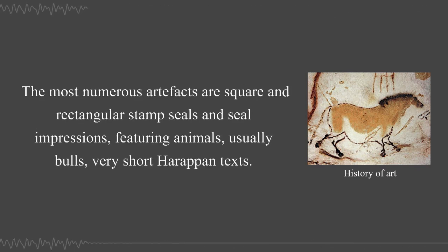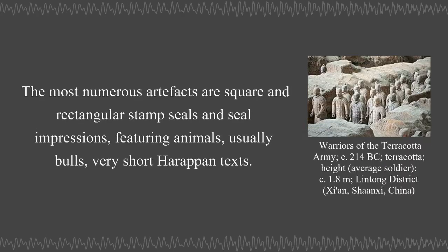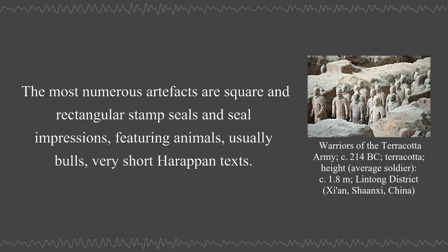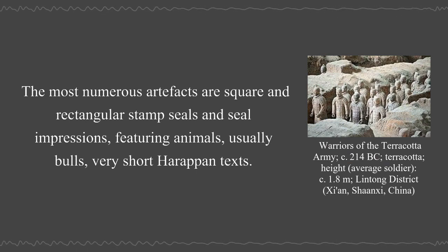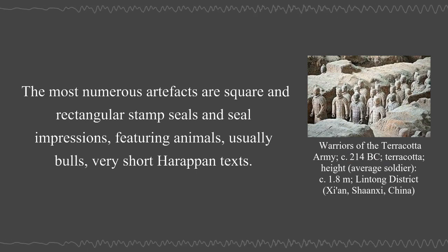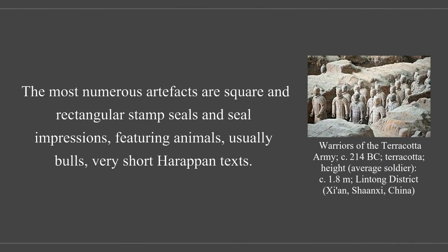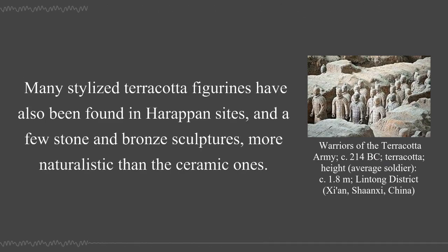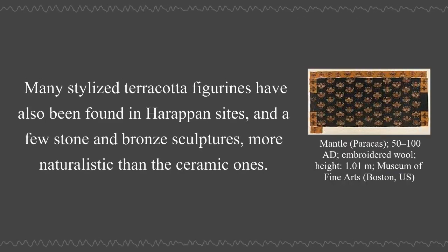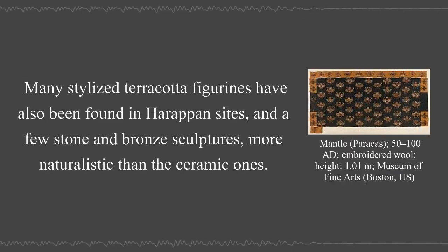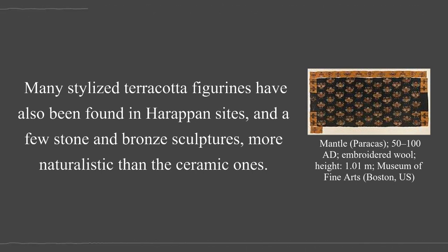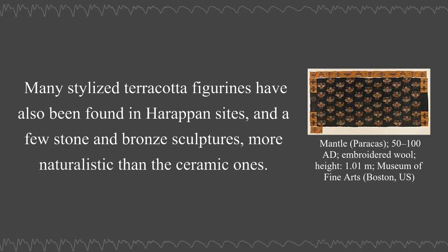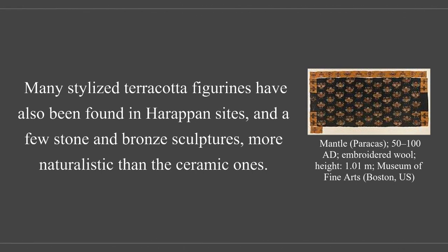The most numerous artifacts are square and rectangular stamp seals and seal impressions, featuring animals, usually bulls, and very short Harappan texts. Many stylized terracotta figurines have also been found in Harappan sites, and a few stone and bronze sculptures more naturalistic than the ceramic ones.